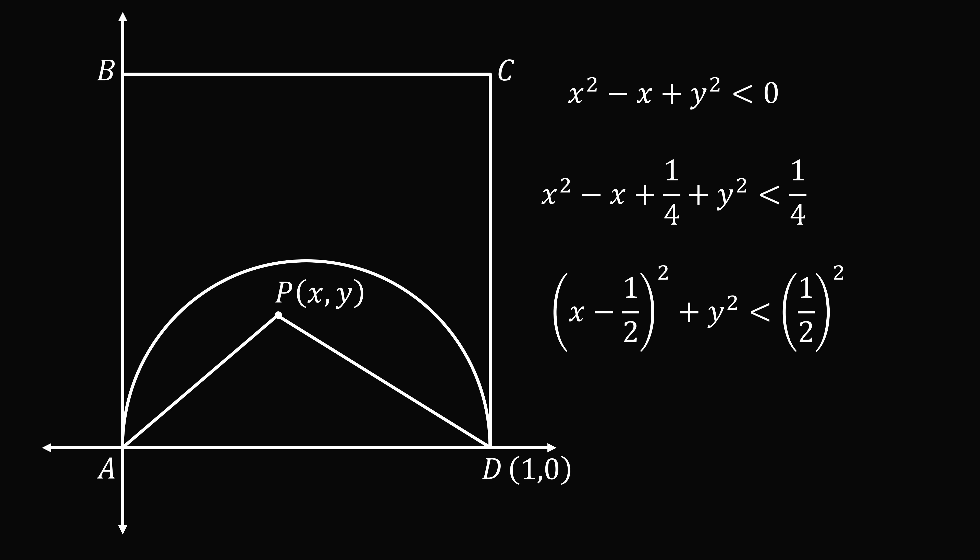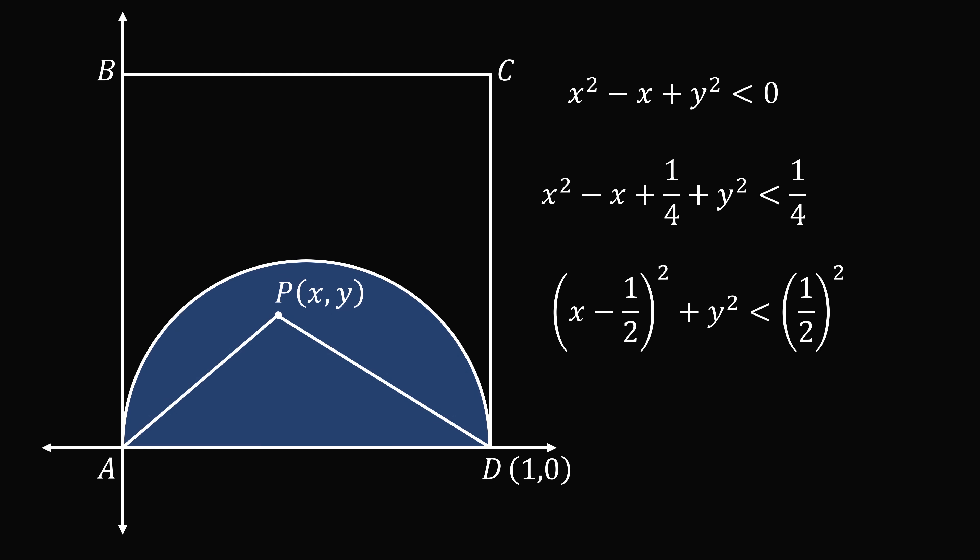This exactly describes the semicircle whose center is halfway along the side AD and has a radius that's equal to 1/2. So the condition is the point P has to be in the interior of this semicircle. So we figured out the geometric trick using this analytic method of coordinate geometry.